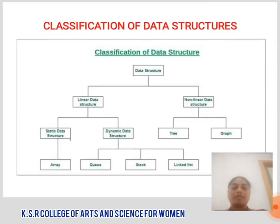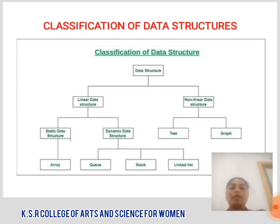Classification of Data Structures: Data structure is categorized into two types — Linear Data Structure and Non-Linear Data Structure. Linear Data Structure is again classified into two types: Static Data Structures and Dynamic Data Structures. Non-Linear Data Structure is classified into two types: Tree and Graph. Static Data Structure is again classified into Array, and Dynamic Data Structure is further classified into Queue, Stack, and Linked List.